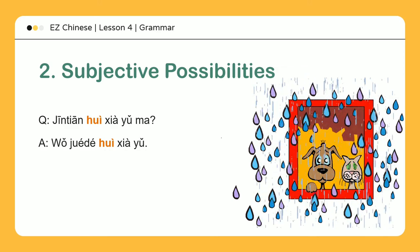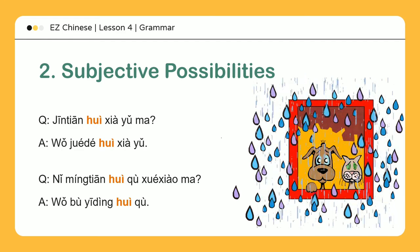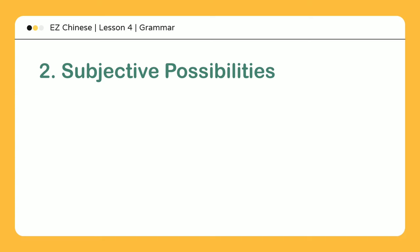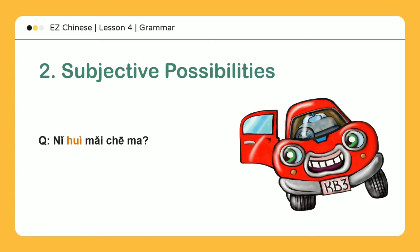你明天会去学校吗? — Will you go to school tomorrow? 明天: 你会买车吗? — Are you going to buy a car?